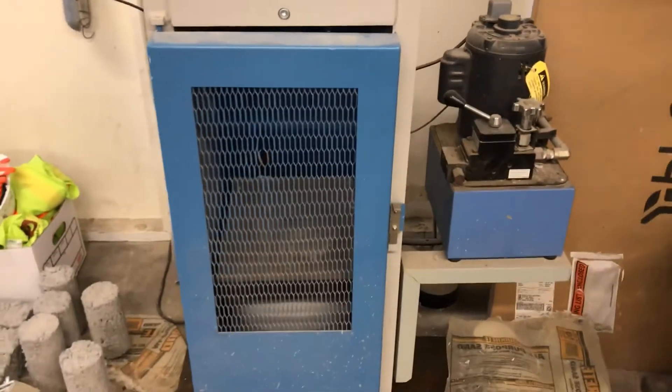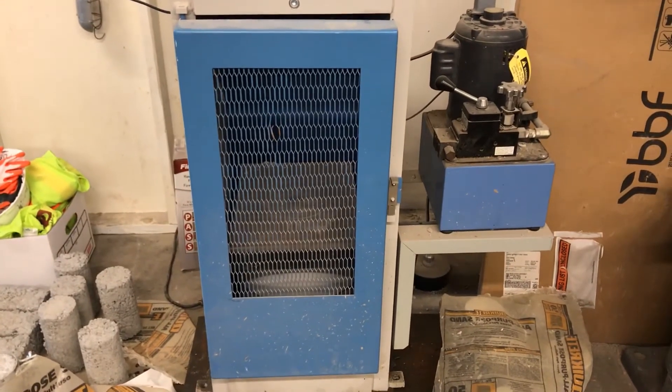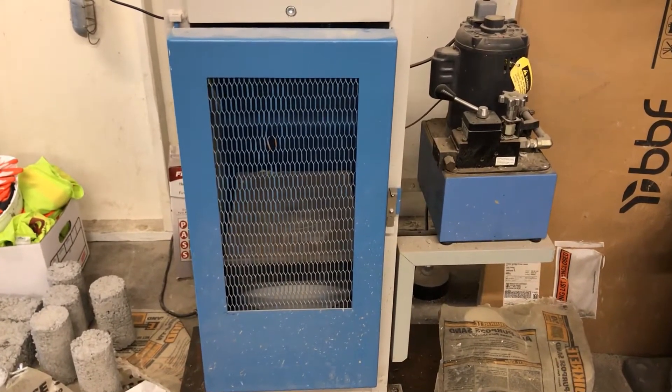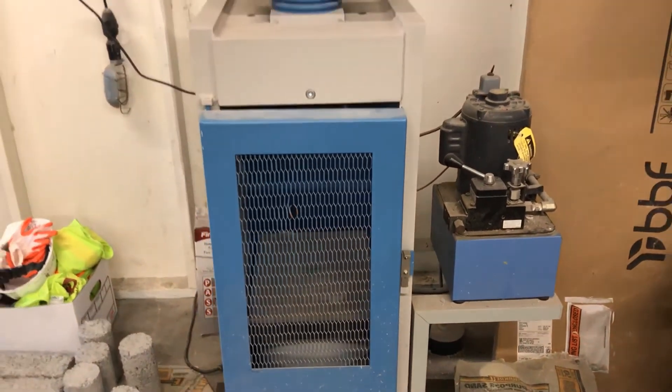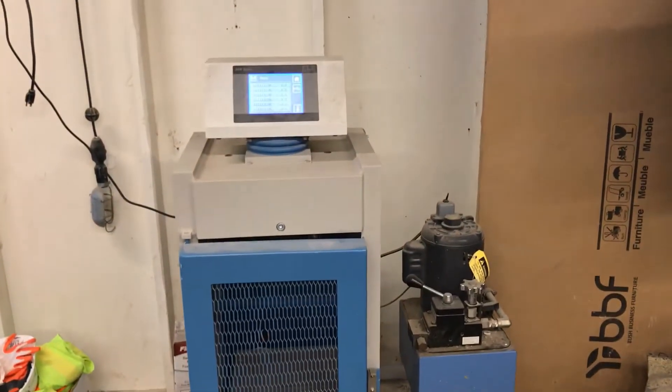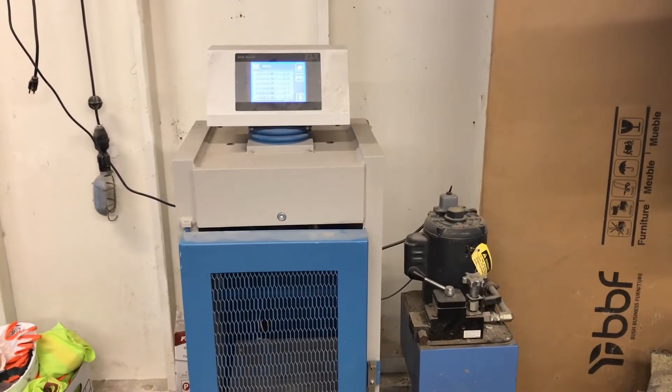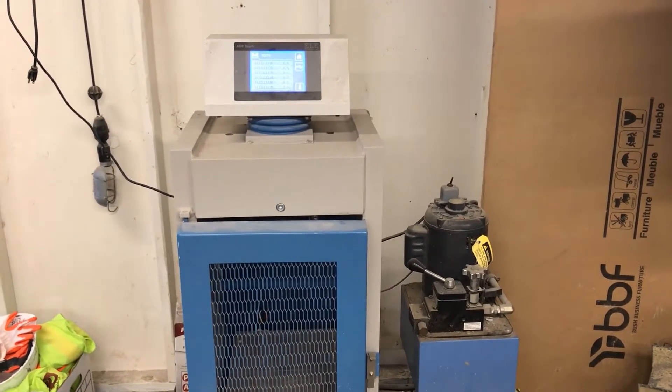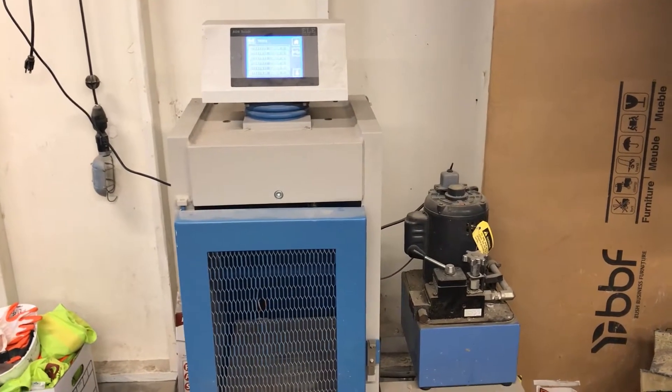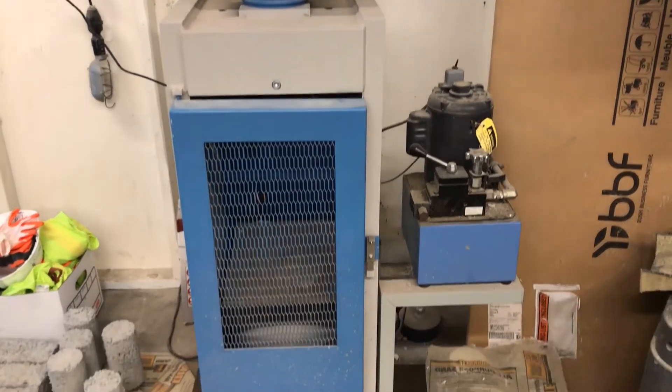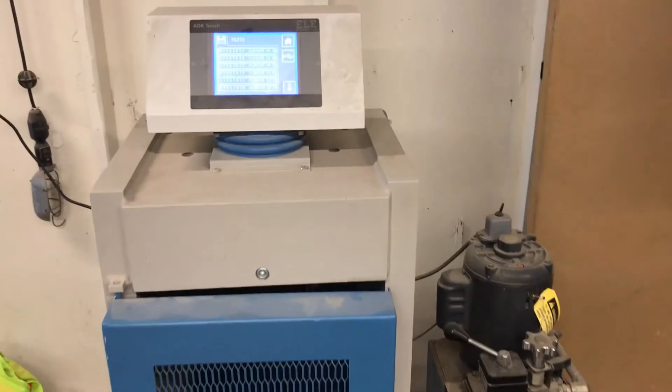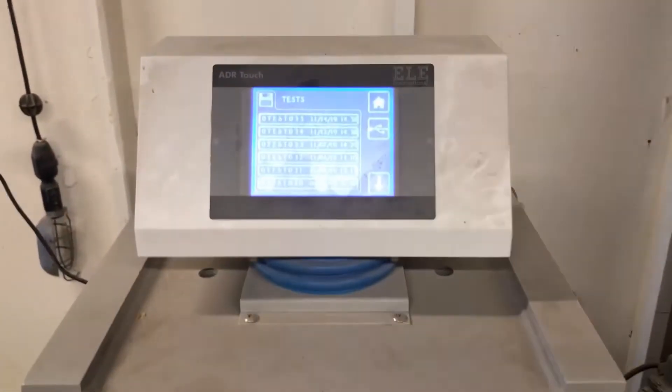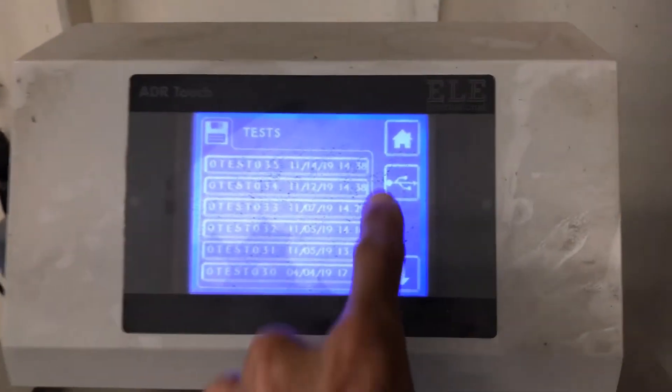This machine also has a greater capacity than the Tineus Olsen machine. I believe this goes up to 500 kips. So this would probably be the better machine to use if you were doing a lot of tests at once. If I had a lot of different cylinders to test at once within a short period of time, this would probably be a better machine to use, being that it stores the data.